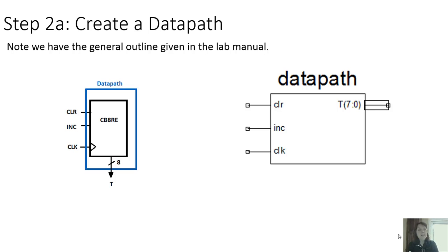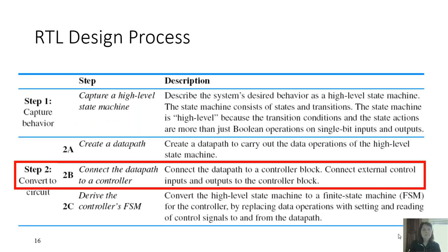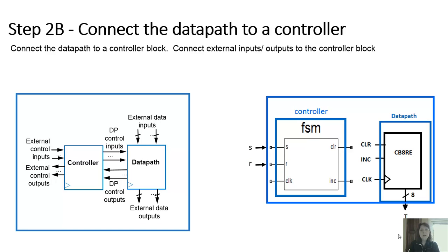Step two B is to connect the data path to a controller. So we want to do that. We see our model basically has on the right our data path thus connected to a controller model. And we know that we have to have control inputs going from the controller into the data path. And likewise, if we need any, having data path outputs going into our controller. For this particular part of our system, we don't have anything going from the data path to the controller. We're only having inputs going into the data path so far.